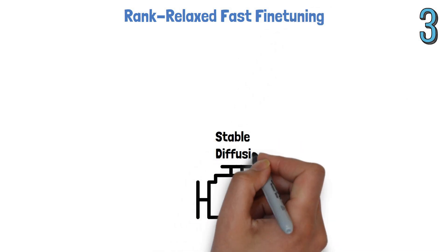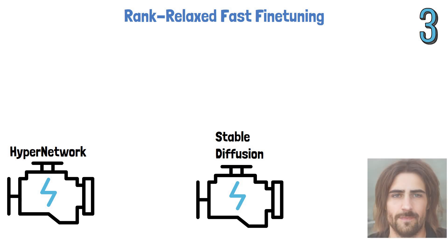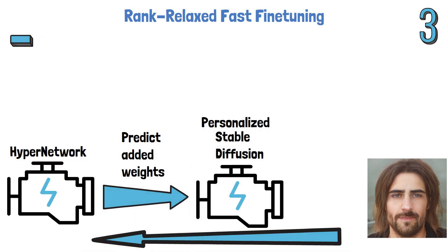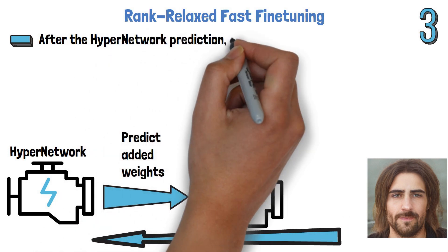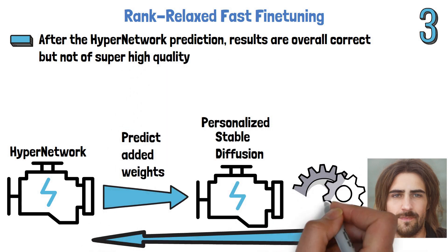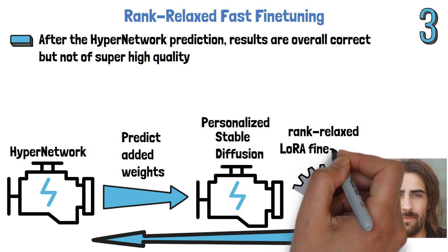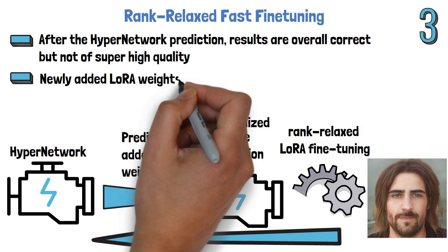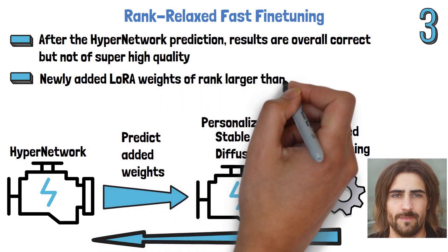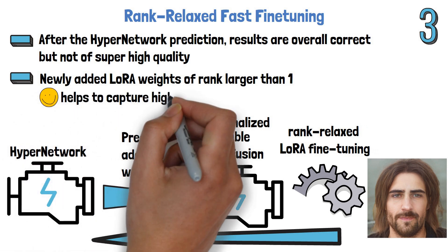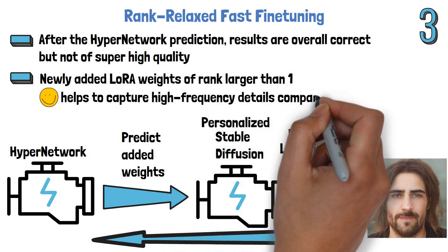The third component is rank-relaxed fast fine-tuning. By now we have the Stable Diffusion model and the HyperNetwork model, which we feed with the reference image. The HyperNetwork predicts the added weights to make Stable Diffusion personalized based on the reference image. But after the HyperNetwork prediction the results are overall correct but not of super high quality and lack details. So here they do another step of rank-relaxed LoRA fine-tuning on the reference image, introducing a new set of weights with higher rank. If you recall, earlier they used rank 1 LoRA and worked with one-dimensional vectors. Adding higher-rank weight matrices helps capture high-frequency details compared to low-rank weights.